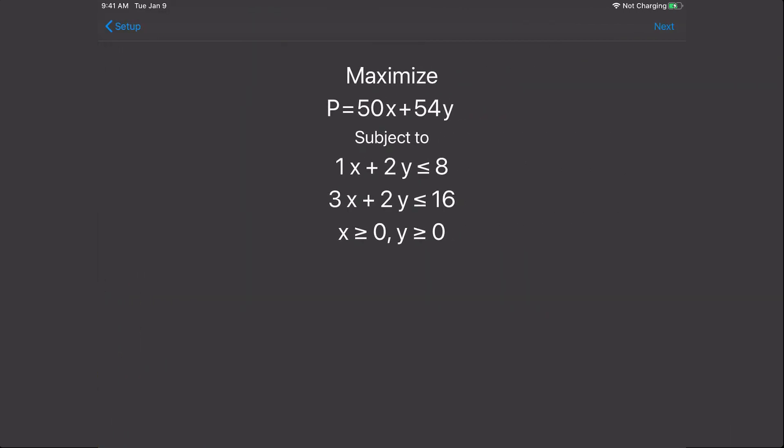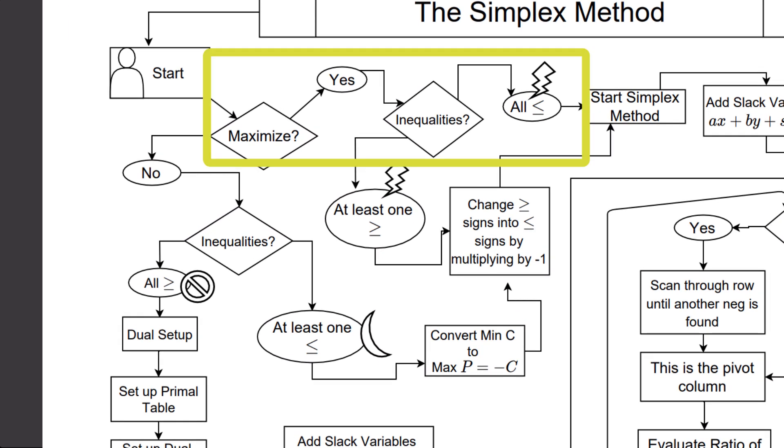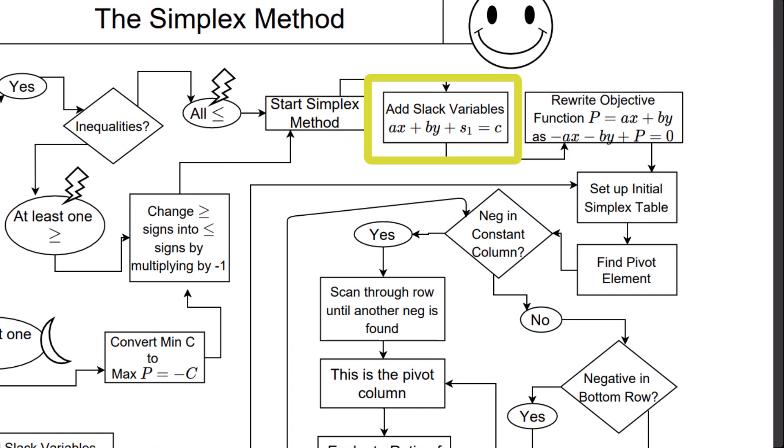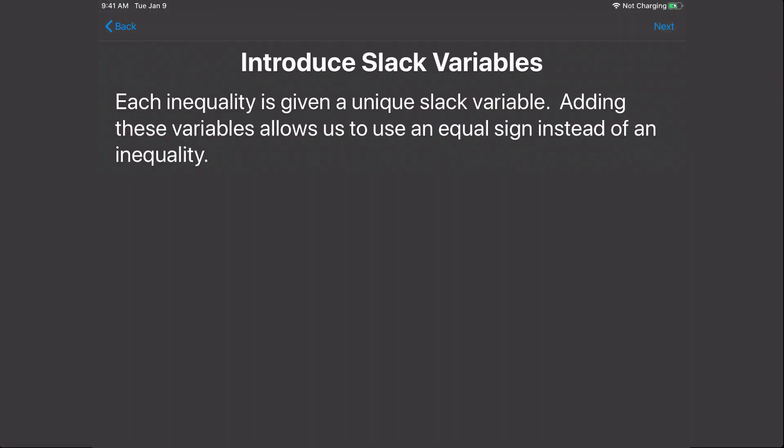Now this page is just confirming the problem, making sure that we've entered everything in correctly. The flowchart says that if we are maximizing with all less than or equal to signs, then the first thing we do is add slack variables. Slack variables are variables we add to the inequality so that we can make the less than or equal to sign into an equals.